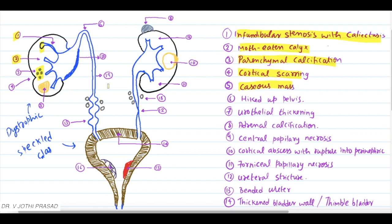The sixth finding is a hiked up pelvis or Kerr's pelvis - K-E-R-R apostrophe S. It is also known as Kerr's kink.